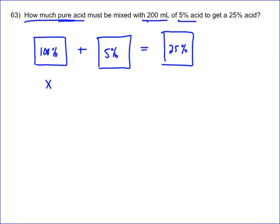It tells me exactly how much of the 5%, that's going to be 200. And if I'm mixing these two together, that means that the total I have, I'm left with has to be 200 plus x, right? That 25% solution must be 200 plus x.